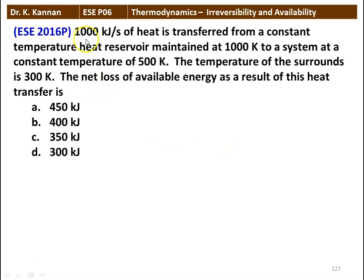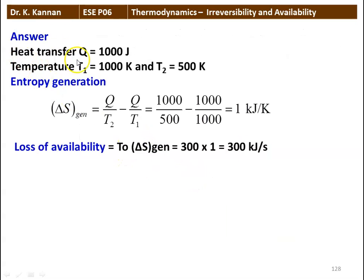Next question: 1000 kilojoules of heat is transferred from a constant temperature heat reservoir at 1000 Kelvin to a system at constant temperature of 500 Kelvin. The surrounding temperature is 300 Kelvin. The net loss of available energy is 300 kilojoules. The entropy generation is Q/T2 − Q/T1 = 1000/500 − 1000/1000 = 1 kJ/K. Loss of availability equals the surrounding temperature multiplied by entropy generation: 300 × 1 = 300 kilojoules per second.